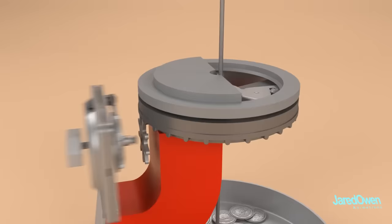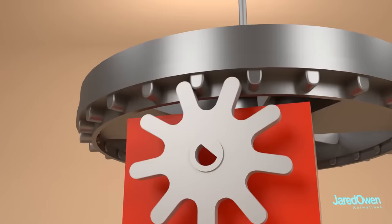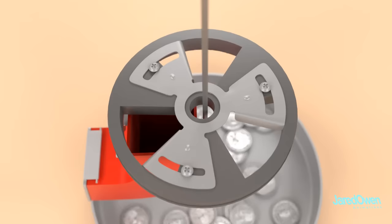It has gear teeth on the bottom that mesh with the spur gear on the coin mechanism. When the spur gear turns, so does the dispenser disc. One complete revolution of the spur gear means the disc only has one third of a revolution.